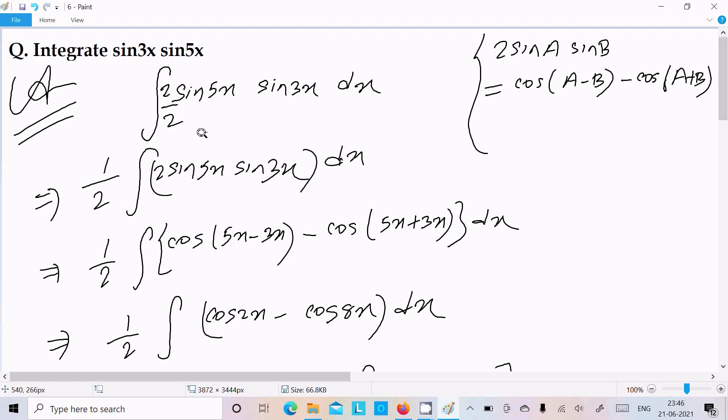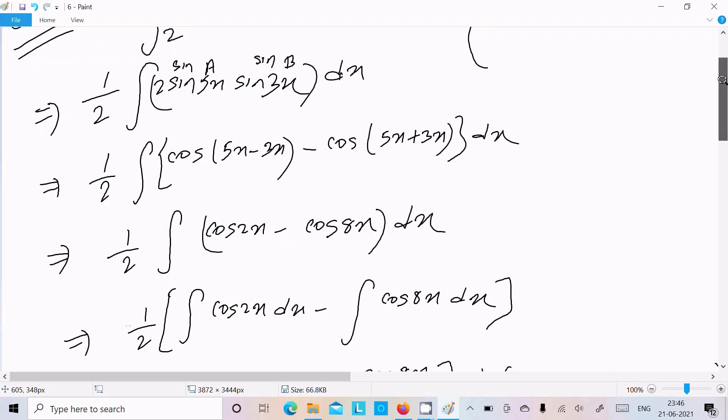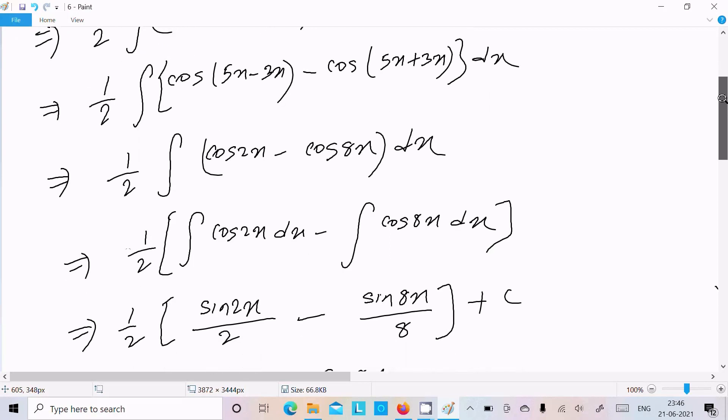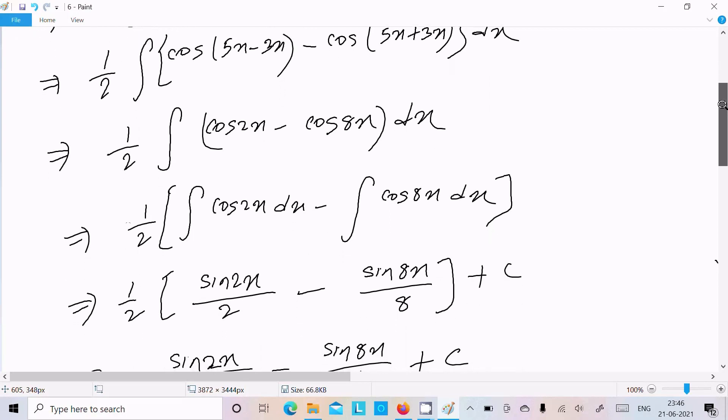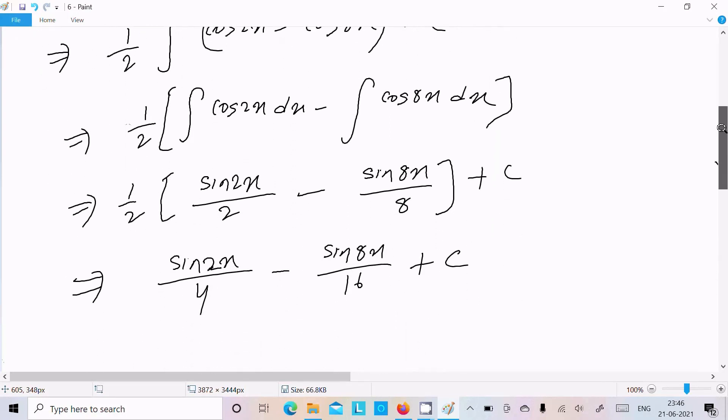Suppose this is sinA and sinB. For sinA sinB, we can write cos(A - B), cos(5x - 3x) minus cos(5x + 3x). After that, do the separation.